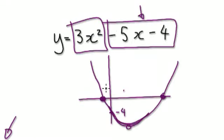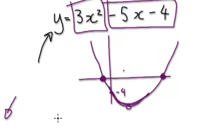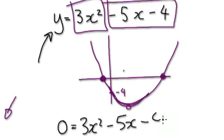Okay, so to do this here, at this point and this point here, the y value will be 0. So put 0 into the y here. That would be 0 equals 3x squared minus 5x minus 4.